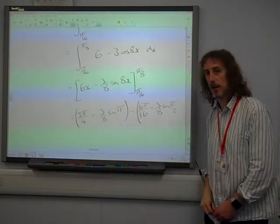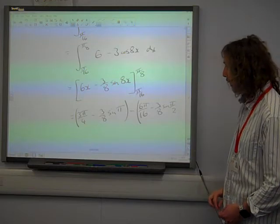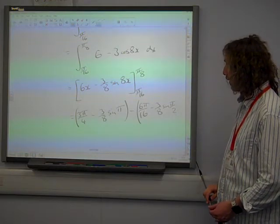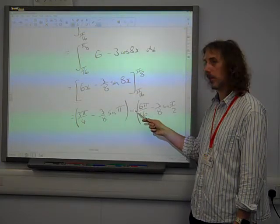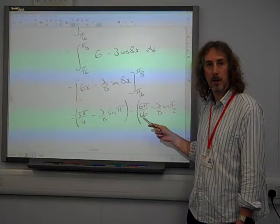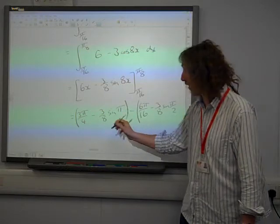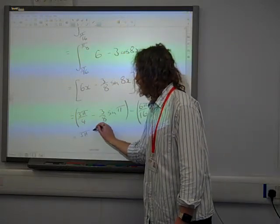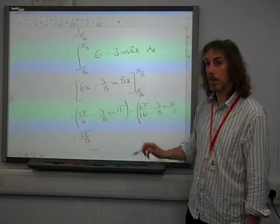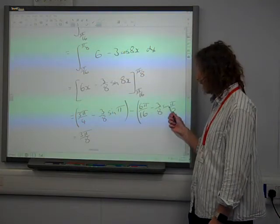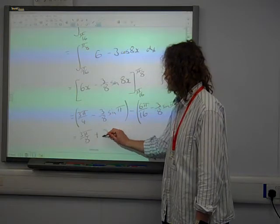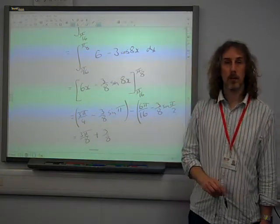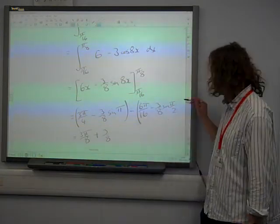Because that's 8 pi over 16. What we ended up with. That's 3 quarters. Take away 3 eighths of pi. So that's 6 eighths take away 3 eighths, so that's 3 eighths of pi. Sine of pi is 0. Sine of pi by 2 is 1. So that is plus 3 over 8, because it's minus 3 eighths.